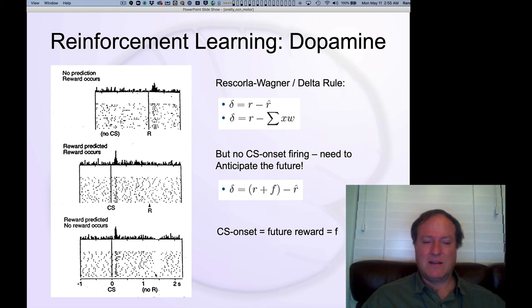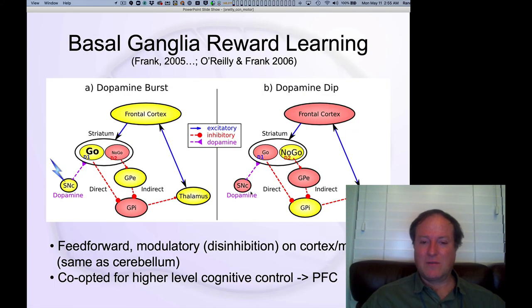So here, Wolfram just said, no monkeys, I'm not going to give you this little drop of juice that you've been expecting. And you see the neurons are very sad, right? They just stop firing. And this is the dip in dopamine that drives that kind of no-go learning that we talked about in the previous slide. That's what we're talking about as this kind of dip. And this is what happens when you don't get something that you expect.